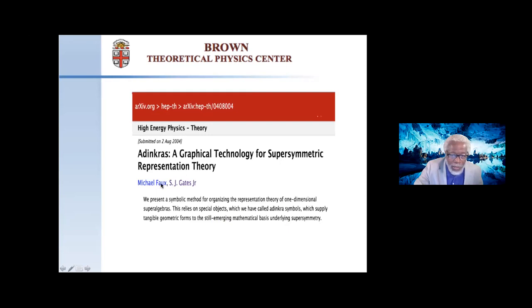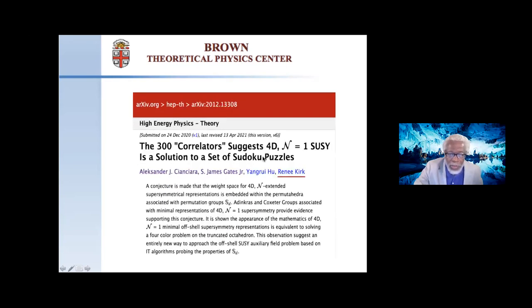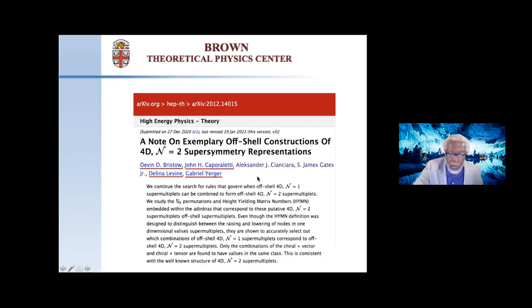So I want to end by talking a little bit about my teaching activities. My research, as I said, is usually done with other physicists like Michael Faux that got us started. But our latest efforts where we've been looking at these two-point correlators, I've actually been doing with one of my graduate students, Alexandra Cianciardo, one of my other graduate students, and an undergraduate student, Renee Herb. I've also done some of this work with Devin Bisto, John Caporaletti, Delina Levine, and Gabe Berger. And so not only have we been able to offer a totally new perspective on what are the symmetries that are at work in supersymmetry, we've also used this as a way to allow young people very early in their career to actually be part of the discovery of things that no one in the world knew before we got our research done.